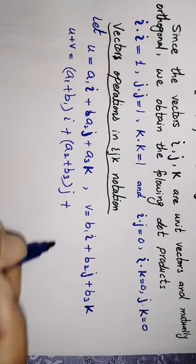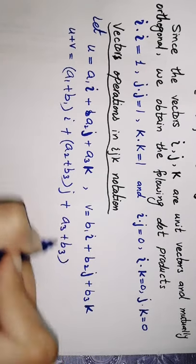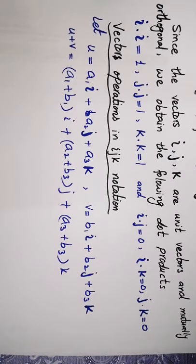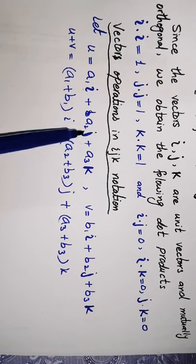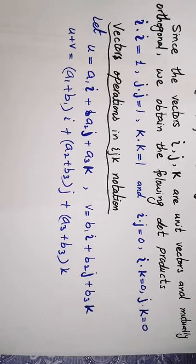For vector addition, we add the corresponding entries: i components together, j components together, and k components together. So u plus v gives (a1+b1)·i plus (a2+b2)·j plus (a3+b3)·k. In this way we can work with vectors in i, j, k notation.